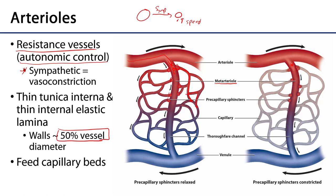Oxygen, nutrients, carbon dioxide, and metabolic waste products and biologically active substances are exchanged, then return through the thoroughfare channel into the venule, and from there back to veins and to the heart. If the pre-capillary sphincters are shut tight, blood flows through the thoroughfare channel without supplying the capillary beds with much blood — some exchange still occurs, but not as much as when the capillaries are open.